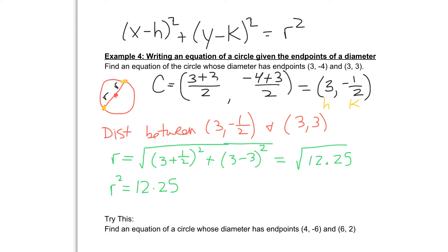And now I'm ready to write my equation. So my answer is going to be x minus the h value, and remember we found h over here, h was 3, squared, plus y minus my k value. Since k is a -1/2, subtracting a negative will make that a positive 1/2. And that's going to be squared. Equal to r squared, and we found r squared to be 12.25.